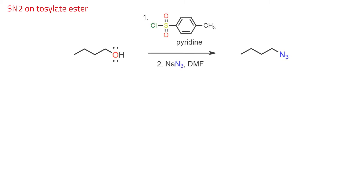It is possible to avoid the use of environmentally problematic alkyl halides in synthesis by using sulfonate ester leaving groups such as tosylate, which is an abbreviation for p-toluene sulfonate ester. Here an alcohol is treated with tosyl chloride and pyridine to give the activated tosylate ester, which then reacts with nucleophiles such as azide to give the substitution product.